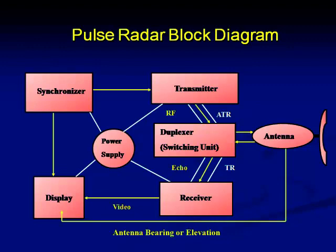If there is any failure of this duplexer during operation, the receiver is going to be the most affected one. The transmitter signal will be in the range of watts, hundreds of watts or even kilowatts. Whereas the received signal from targets hundreds of nautical miles away will be in the range of 10^-25, 10^-26, or even 10^-28 watts. So the isolation required between transmitter and receiver will be of the order of 10^-30 watts. That is the importance attached to this device — the duplexer.